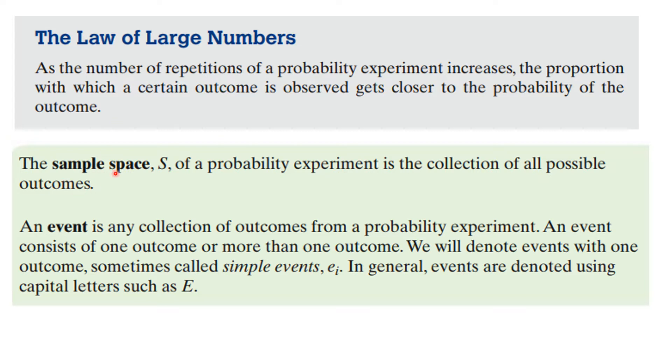We do have a sample space of a probability experiment and that's a collection of all possible outcomes. And an event is any collection of outcomes from a probability experiment. An event consists of one outcome or maybe more than one outcome. Events with one outcome are called simple events and in general they're denoted by using capital letters such as E. You see, events are a set of outcomes.